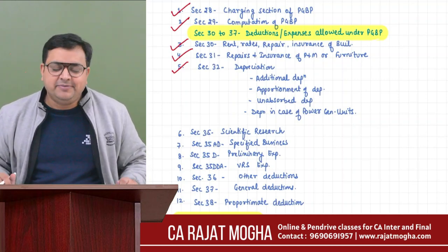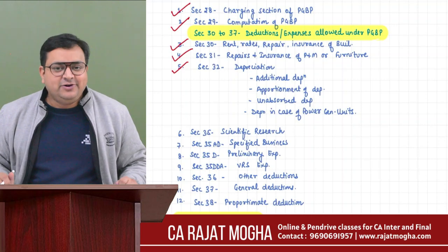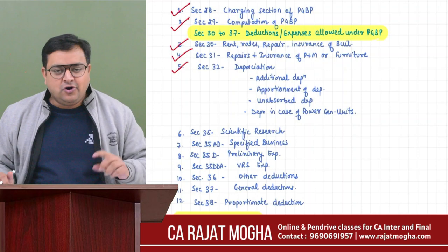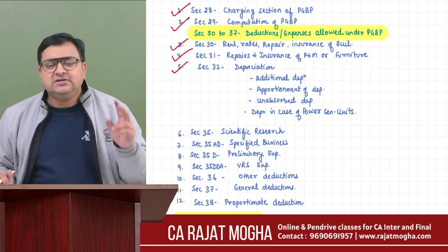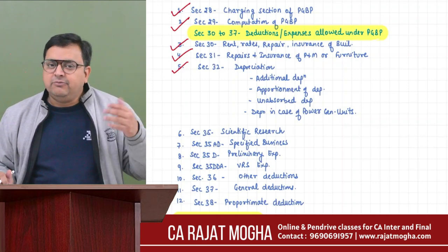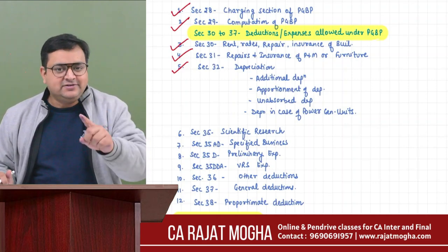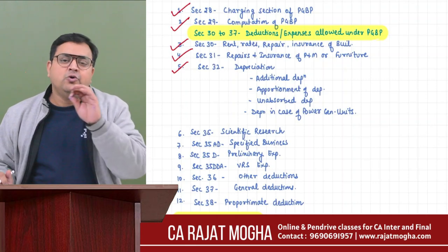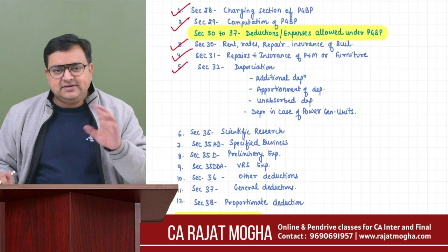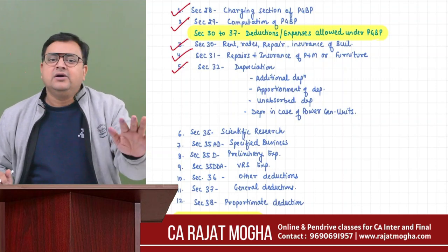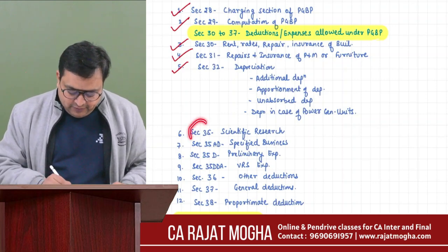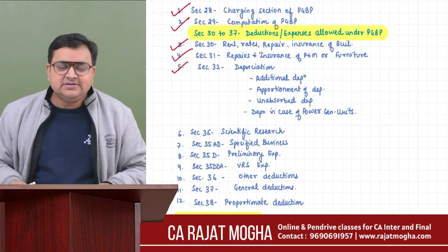Section 32 - depreciation - was discussed in detail in the last class. In PGBP, we use the WDV method on block of assets. Only for power generating units can SLM be used, but they have the option to choose WDV also. However, whichever method is chosen in the first year must remain always.